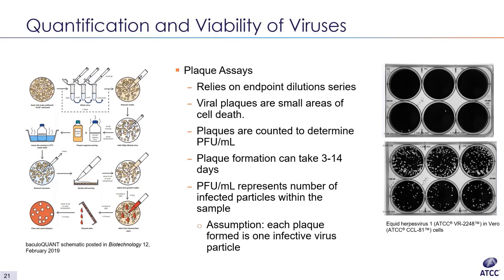Several different plaque assay methods exist. One of the oldest techniques removes the overlay, requires fixing the cells, and stains them with crystal violet to count plaques. A second common method adds a second overlay mixed with neutral red for plaque counting. Virus-specific assays can use immunohistochemistry to confirm plaques, increasing specificity by using virus-specific antibodies — we use an assay of this type for some of our influenza strains.